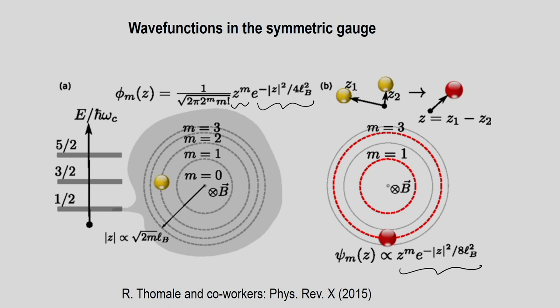Each of these Landau levels is characterized by a radius given by the modulus of z, where z is a complex number. Specifically, z = z₁ − z₂, where z₁ and z₂ are the complex coordinates of two particles with respect to a chosen origin, and the radius is given by √(2m) · l_B.